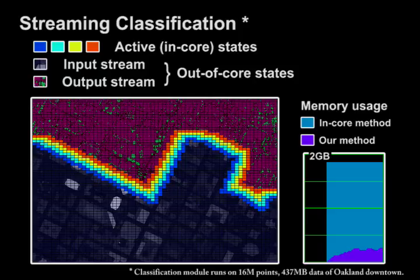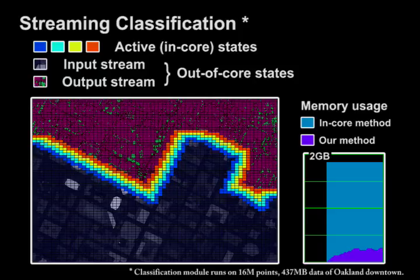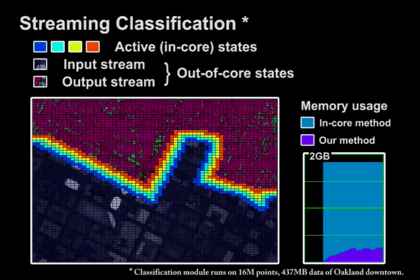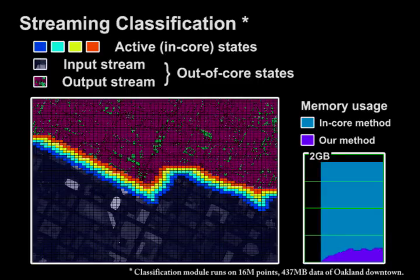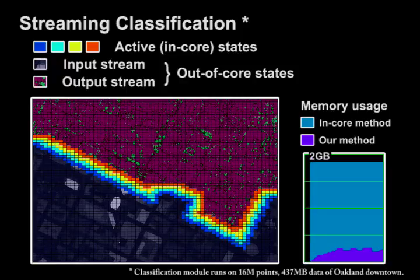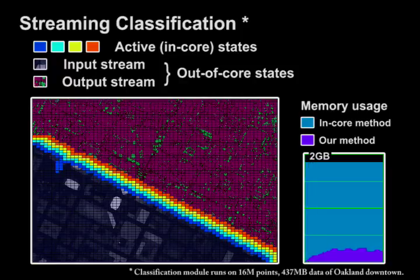On the other hand, the solid colored cells denote the active dataset loaded in-core. They act as the frontier through the data stream, and thus require only a small amount of memory. The details of our streaming framework can be found in our CVPR 2009 paper.